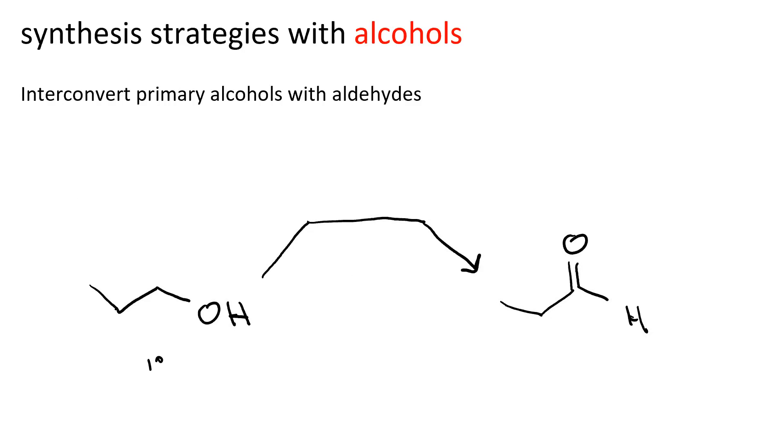And on the right, we have an aldehyde, and the name of the aldehyde is propanal. So we actually have three different sets of reagents that will accomplish this conversion. We could use pyridinium chlorochromate in dichloromethane, or we could use the Swern oxidation, which would be dimethyl sulfoxide and oxalyl chloride.